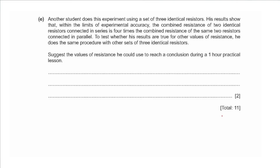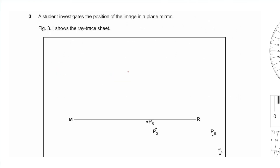Part e: another student finds that the combined resistance of two identical resistors in series is four times that in parallel, and wants to verify this with other resistance values. We could use sets of three identical resistors at 5 Ω, 10 Ω, 15 Ω, 20 Ω, and 25 Ω — giving five or more sets of readings to reach a conclusion.